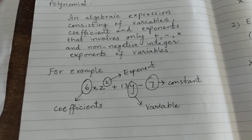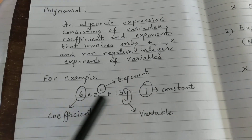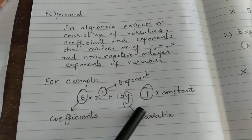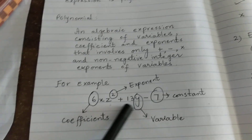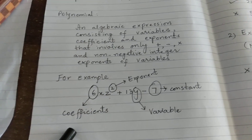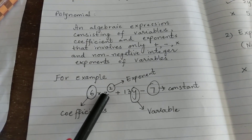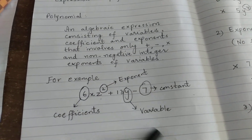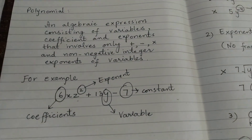For example, here is an algebraic expression with three terms. First is 6xz squared, second is 13y, and third is 7. Here 6 is the coefficient, 13 is the coefficient, and 7 is the constant. Z squared is the exponent and y is the variable. This is a polynomial expression.